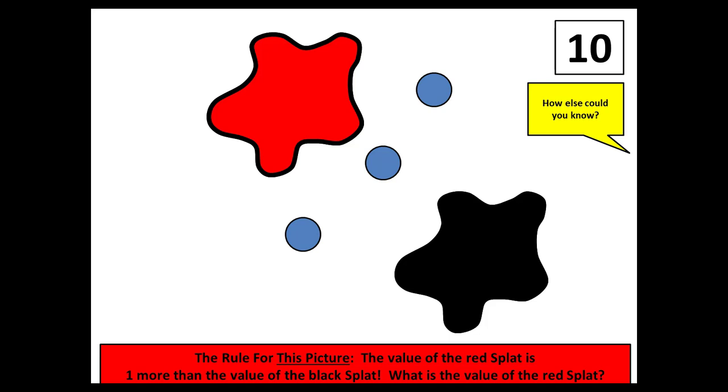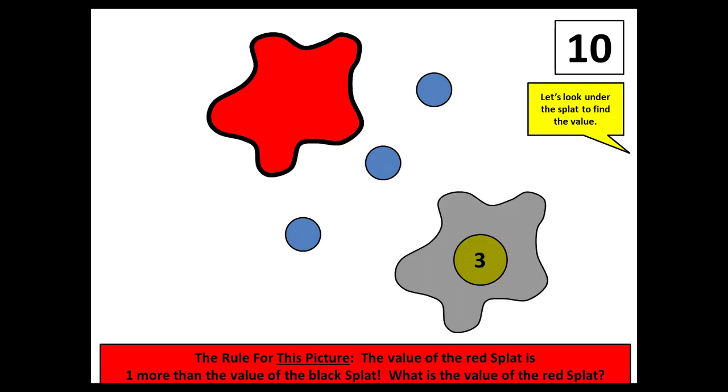The third box is actually not a question. Let's look under the splat to find the value. It's a signal to you that you are one click away from revealing the answer. So don't click again until you're ready. When you do click, you'll see that the first value revealed is the one under the black splat. So there is actually one more opportunity for conversation before the final reveal. And then with the next click, you see the value of the red splat. In this case, it's four.